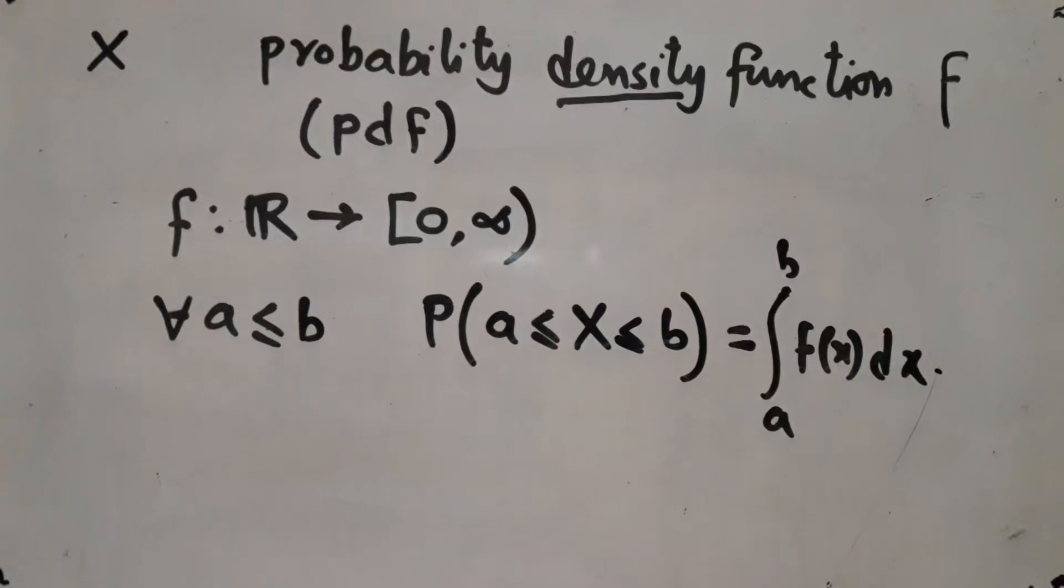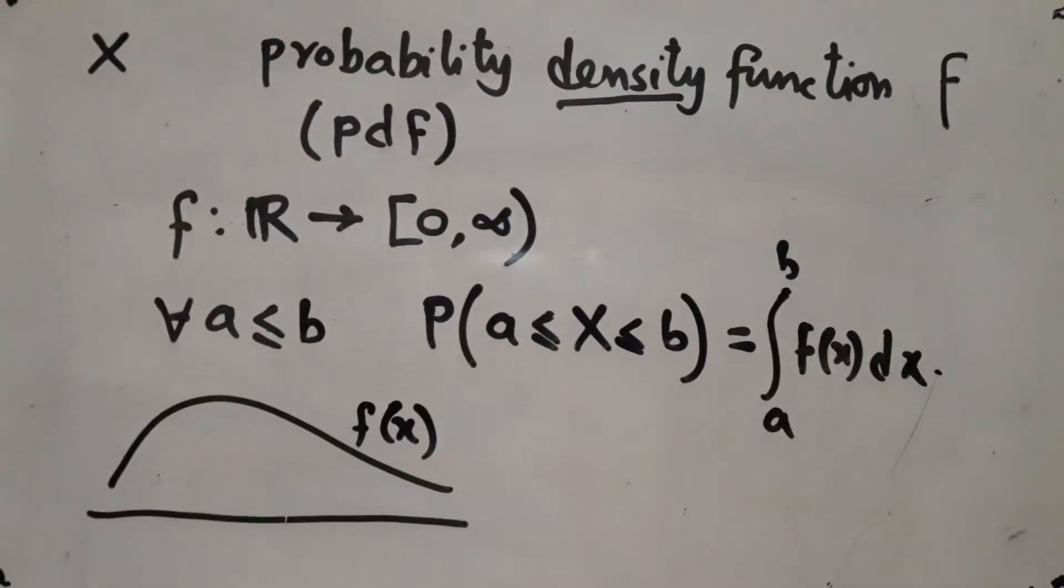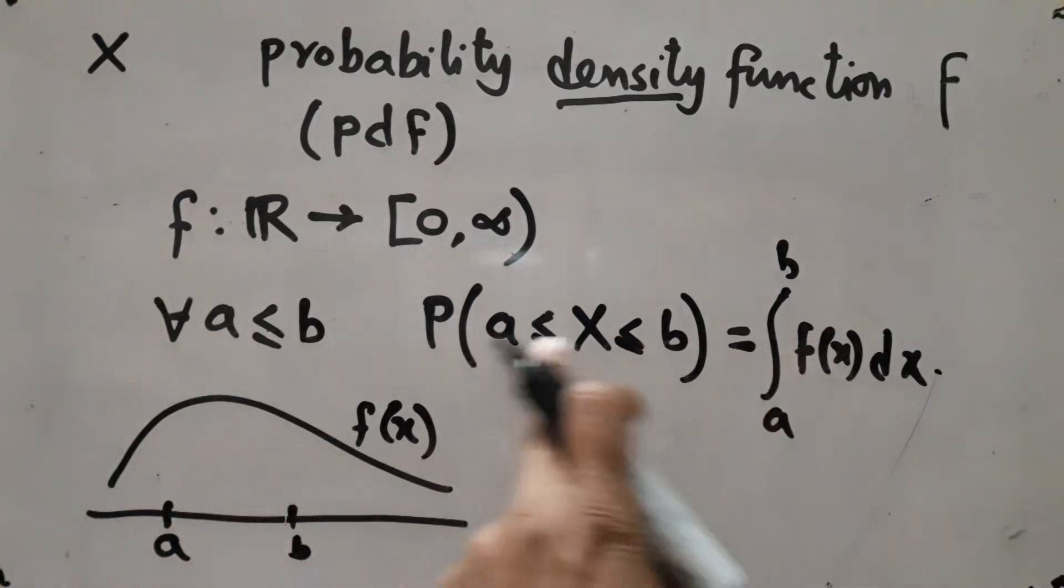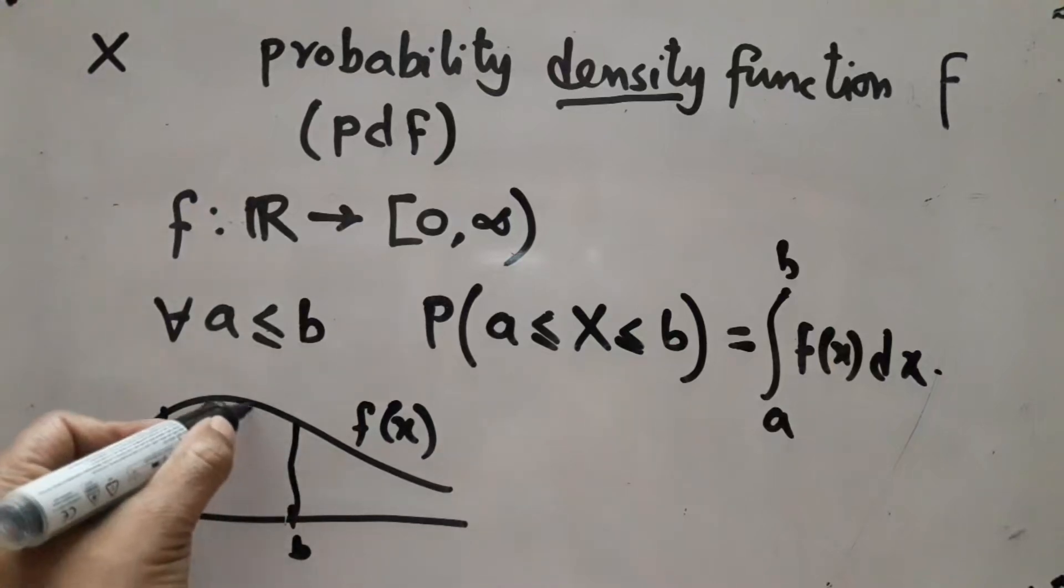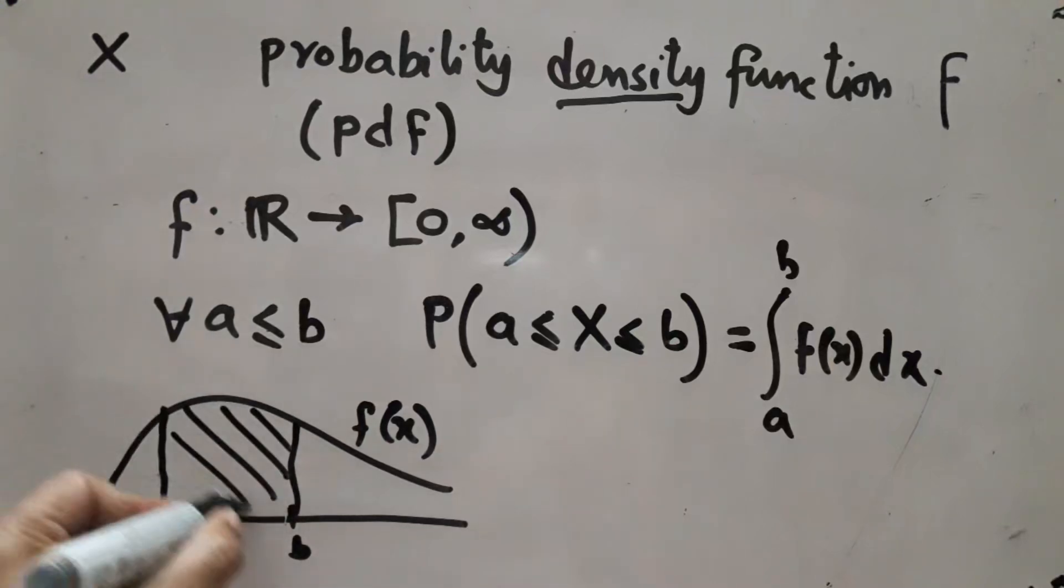Now pictorially you can think of the function in terms of its graph. It does not have to be continuous like this, it is just one example. And if someone gives you two points a and b, then the probability that X lies between them is this integral which is nothing but the area between those two lines under the curve. So this function gives you probabilities for all intervals.